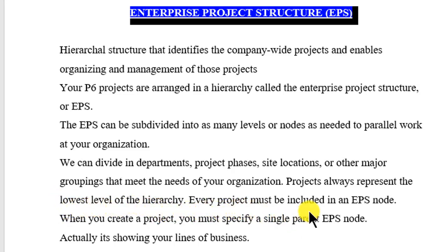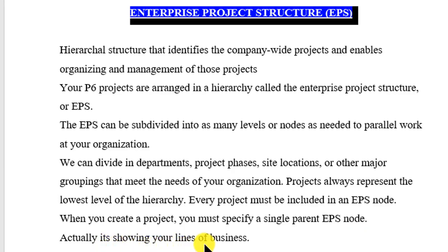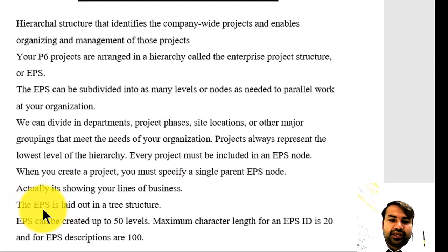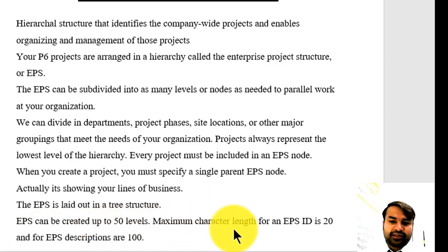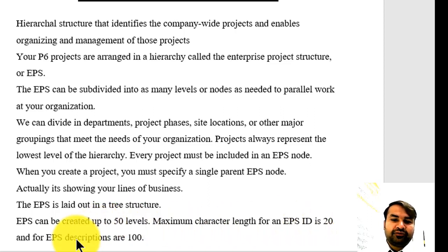Every project must be included in an EPS node. When you create a project, you must specify a single parent EPS node — it shows your line of business. The EPS is laid out in a tree structure and can be created up to 50 levels. The maximum character length for an EPS ID is 20, and for an EPS description it is 100.